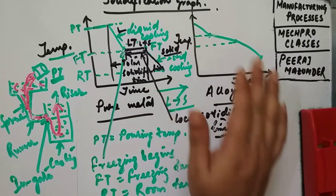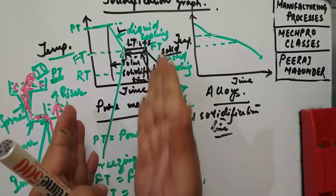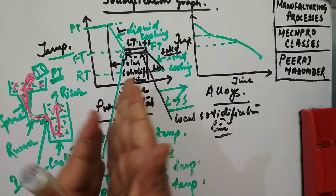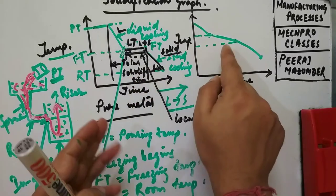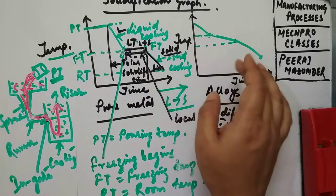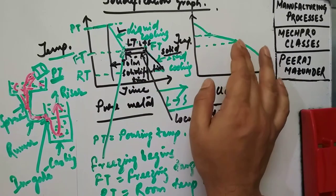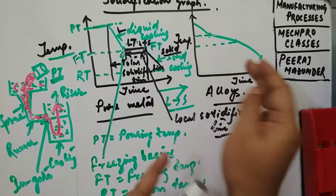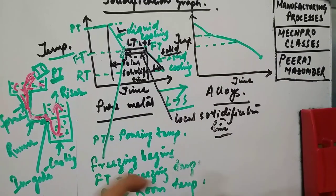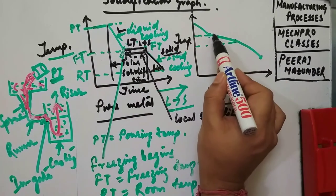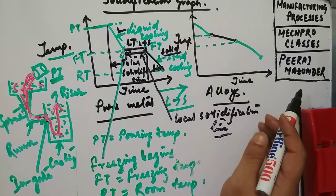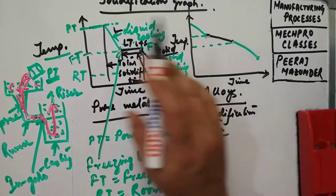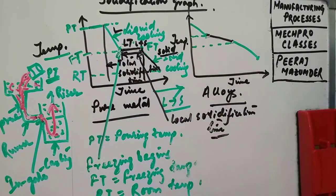Coming to the alloy graph — if you are able to visualize this type of graph, you can easily find out what is going to happen, except that the straight line over here for phase change will not be a straight line. It will be somewhat like an inclined line. Everything else remains as it is.